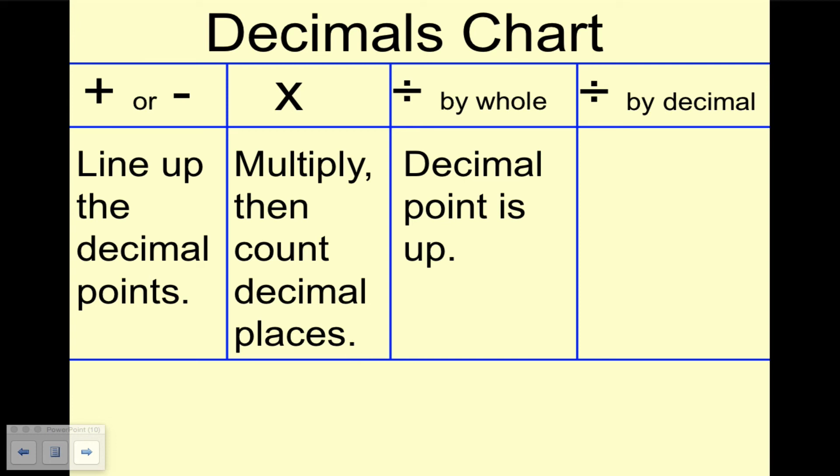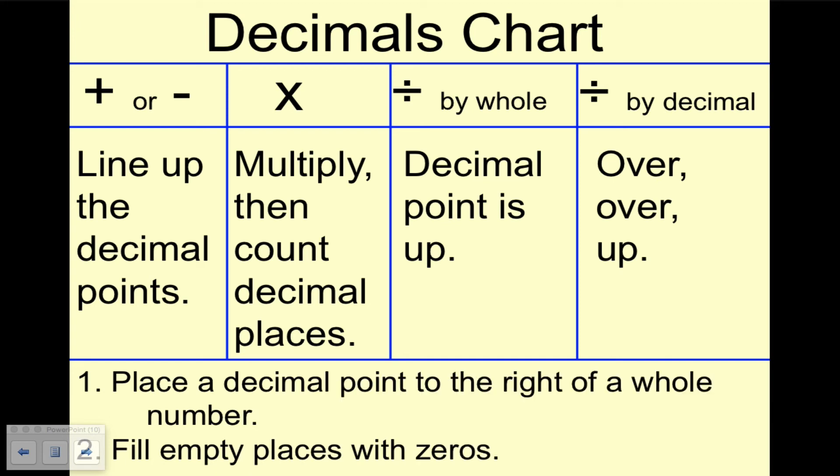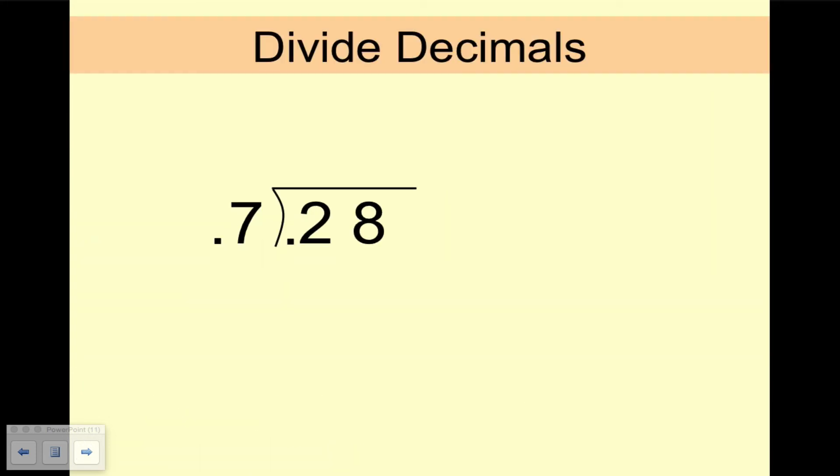To divide a decimal by a decimal, the rule is over, over, up. And by over, over, up, what we mean is 0.28 is the dividend and 0.7 is the divisor in this problem. You can't have any decimal places in the divisor, so this needs to move over one place to the right, which means we have to move the dividend also one place to the right. That was the over, over, and then up.